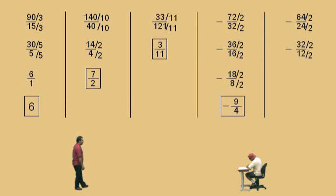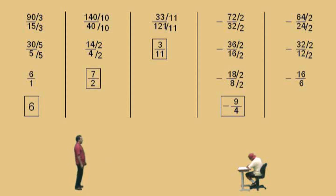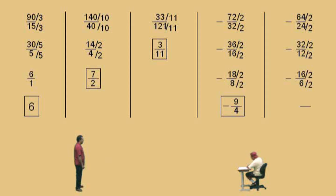Professor Perez: 32 divided by 2 is what? Charlie: 16. Professor Perez: 16. 12 divided by 2? Charlie: 6. Professor Perez: 6. And again, we can divide by what? Charlie: 2. Professor Perez: 2's again. And what's 16 divided by 2? Charlie: 8. Professor Perez: And 6 divided by 2? Charlie: 3. Professor Perez: 3. Our answer is negative 8 thirds.